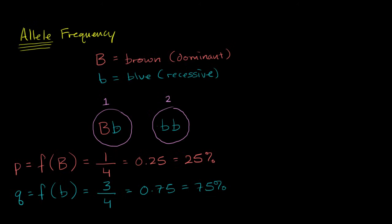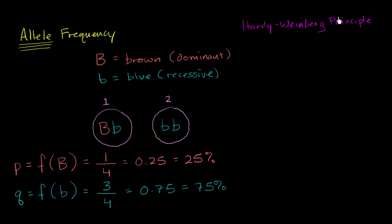Now that we're familiar with the idea of allele frequency, let's build on that to develop the Hardy-Weinberg principle, which is a really useful principle for thinking through what allele frequencies might be, or what probability you would have if you found someone — what percentage of a population might be homozygous recessive, homozygous dominant, or a heterozygote. It really builds on the work we've already seen with allele frequency.